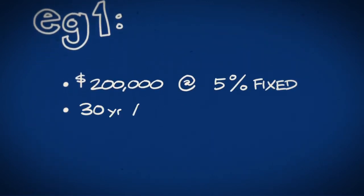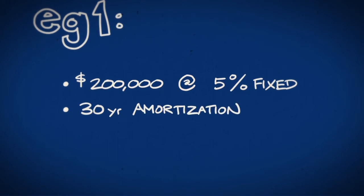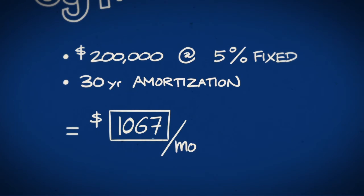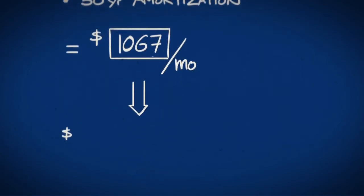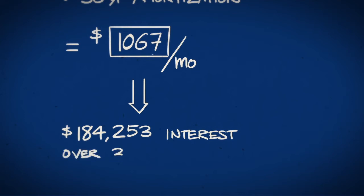Here's an example. A mortgage of $200,000 at an average fixed rate of 5% and a 30-year amortization will have a $1,067 monthly payment, and you will pay $184,253 in interest over the 30-year period.